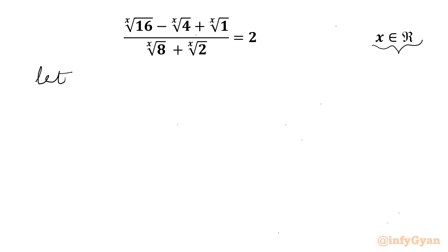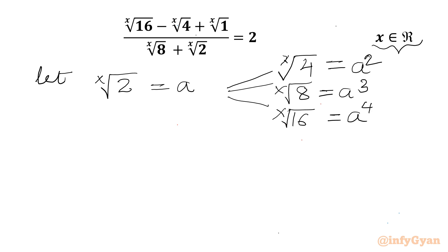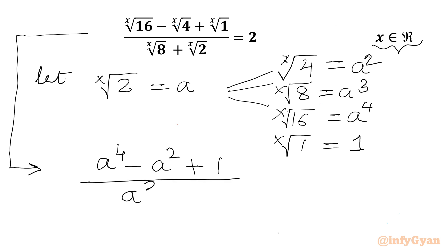Let's get started by considering the substitution: x-th root of 2 equals a. Now I can write all the values: x-th root of 4 is a squared, x-th root of 8 is a cubed, x-th root of 16 is a to the power 4, and x-th root of 1 is 1 for all real x. Let us rewrite our equation in terms of a: (a⁴ - a² + 1) divided by (a³ + a) equals 2. Now we know that a cannot be 0, so I can cross multiply.